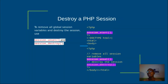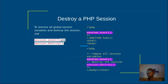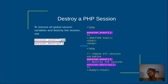You can also destroy sessions in PHP. For example, when you log out, the logout is simply a session destruction — you destroy the session so that you are no longer able to access a particular authenticated page. To remove the global session variable and destroy the session, you use session_unset() to remove the values that were inside, and session_destroy() to destroy the whole session array.